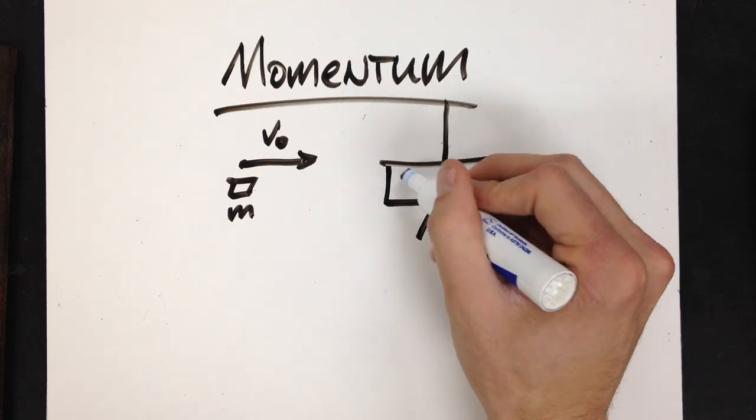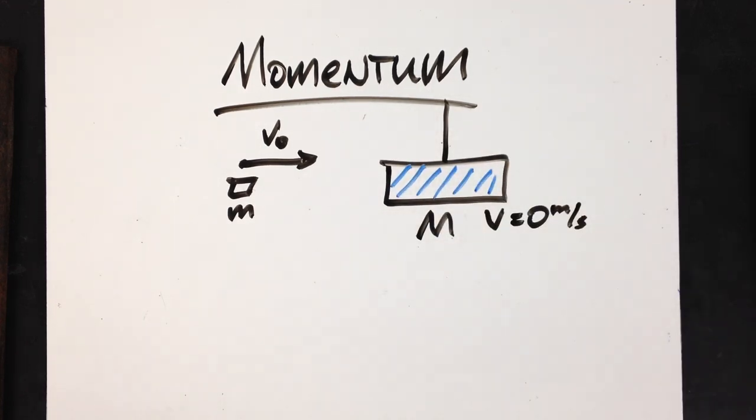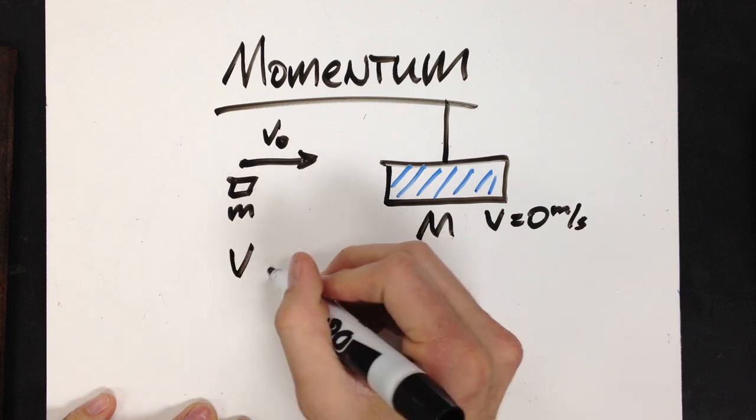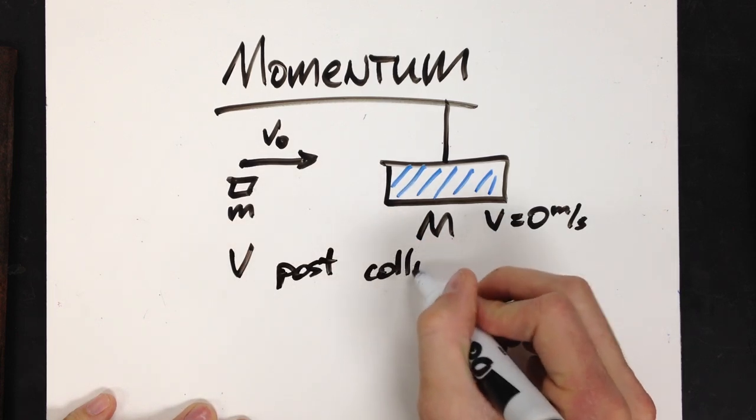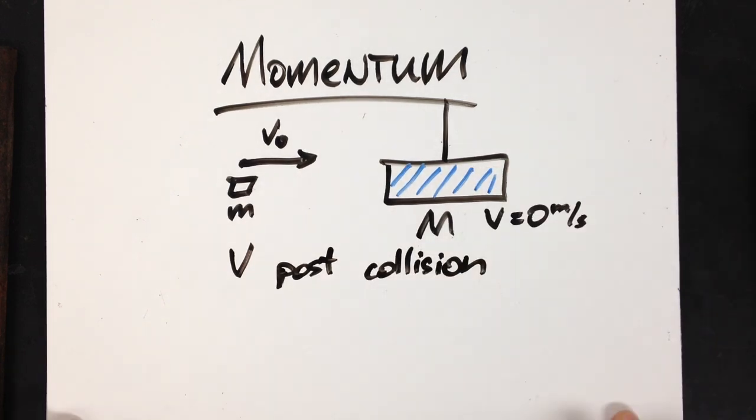Now, does that mean that every problem you're going to do ever, your pendulum is at rest? No, but we're just going to work that example where it is. So, using the conservation of momentum, we can get the velocity post-collision. Now, how we're going to do that is utilizing the conservation of momentum.